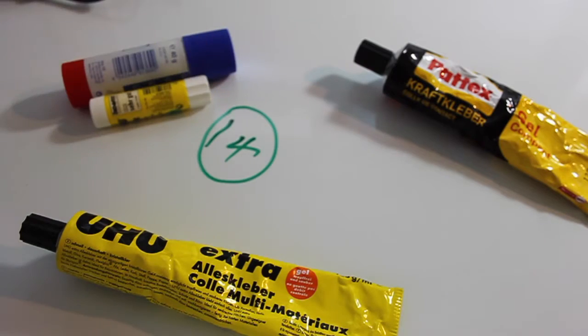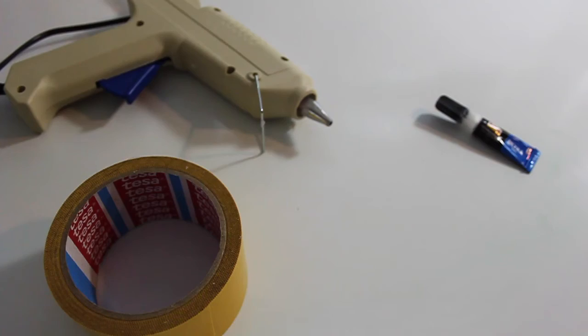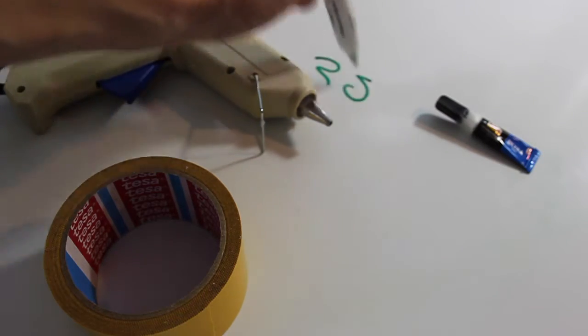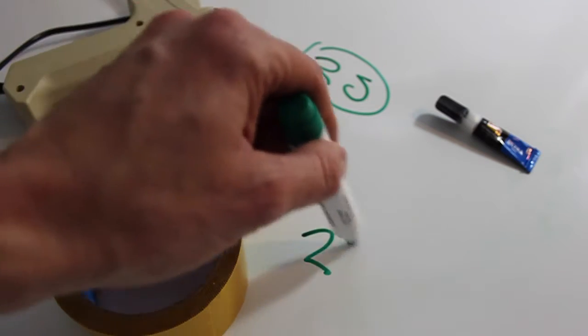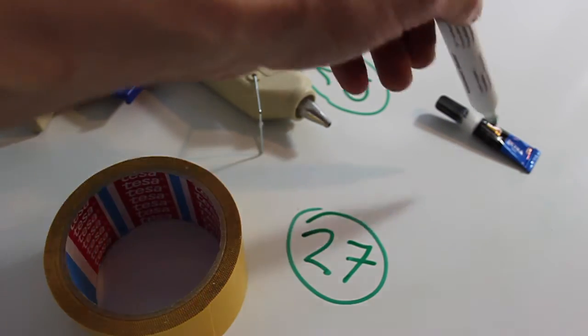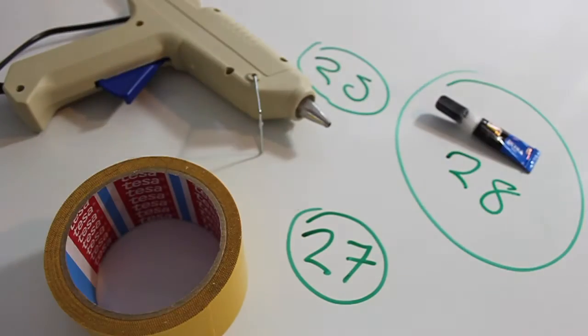So overall we've got kind of three not quite so good glues. Pritt sticks I would definitely not use. Multi-purpose glue and the contact glue not so great. Glue gun, very good if you're better at using it than me. Double-sided sticky tape was again very good. My personal favourite. But overall I think for the best results get yourself a tube of super glue and keep your fingers out of the way.